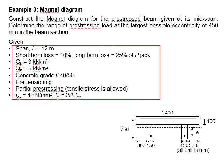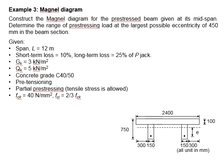These are the details given. The span is 12 meters long. The short-term losses will be 10% and the long-term losses will be 28% of the jacking force. The G_k and Q_k will be 3 and 5 kN per meter square. Concrete grade C40/50 is being used.